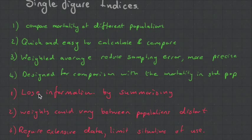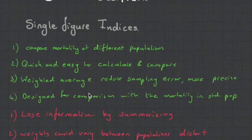They do have a few cons. They lose information, but this always happens when you summarize information. The weights could vary between populations, and we're going to see that's one of the areas the figures we're going into try to combat this distortion. They require extensive data, and there are limits which limit the situations they can be used in.